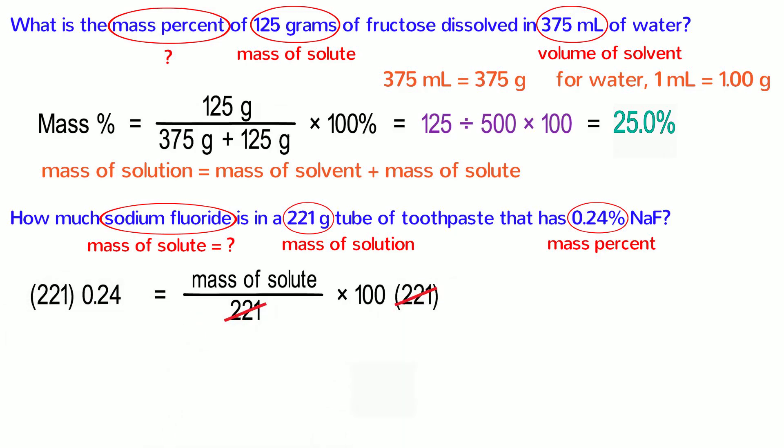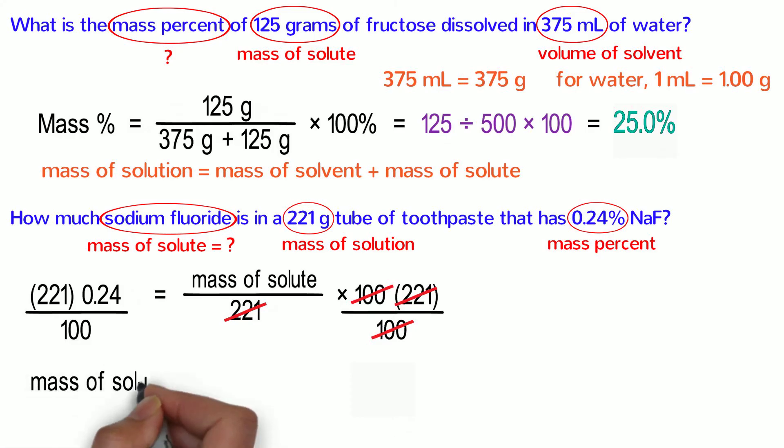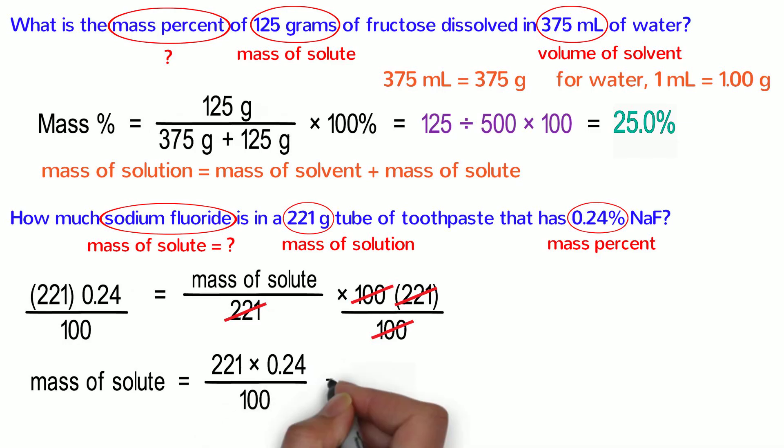Next, we can multiply both sides of the equation by 221, which cancels it out on the right. Finally, we can divide both sides of the equation by 100 to cancel it out on the right side as well. This leaves us with the mass of the solute being equal to 221 times 0.24 divided by 100, which calculates to be 0.53 grams. That is approximately one-tenth the lethal dose of sodium fluoride for adults, but it is enough to be dangerous for small children, so caution should be exercised when allowing children to use any fluoride-containing product.